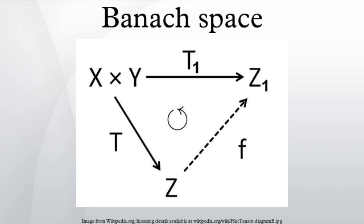Although uncountable compact metric spaces can have different homeomorphic types, one has the following result due to Milutin's theorem: let K be an uncountable compact metric space, then C(K) is isomorphic to C([0,1]). The situation is different for countably infinite compact Hausdorff spaces. Every countably infinite compact K is homeomorphic to some closed interval of ordinal numbers equipped with the order topology, where ω^α is a countably infinite ordinal. When ω^α₁ and ω^α₂ are two countably infinite ordinals with α₁ ≤ α₂, the spaces C(ω^α₁) and C(ω^α₂) are isomorphic if and only if α₂ < α₁·ω.